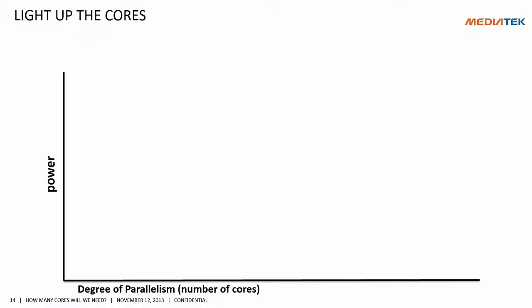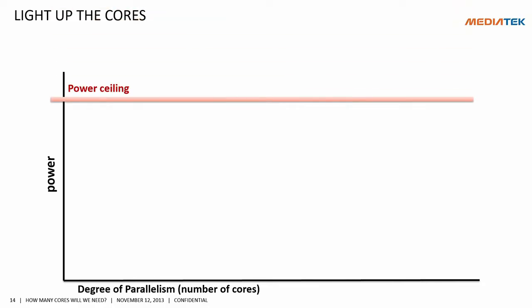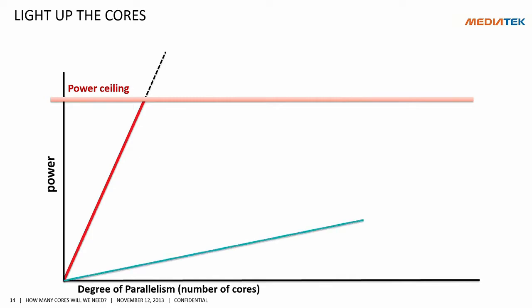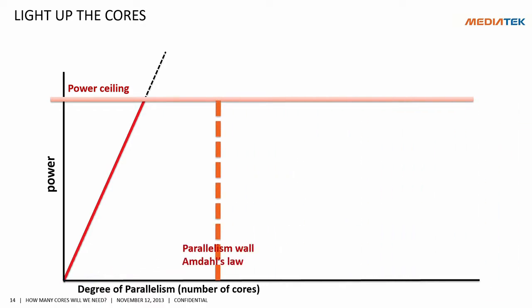Let's use a chart to visualize the situation. We use the vertical axis as power and the horizontal axis as the number of cores. First of all, we have a power ceiling — a power boundary we cannot pass. Everything above becomes dark, which is why we call it dark silicon. For any special kind of core, we use a line to indicate how power grows with the number of cores. What we really want is a line as flat as possible, so that as the number of cores grows, you don't hit the ceiling.